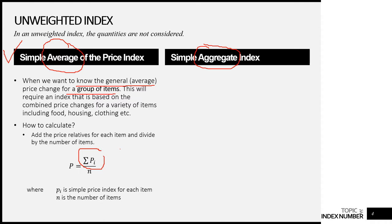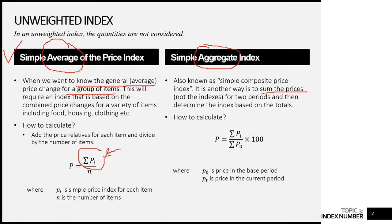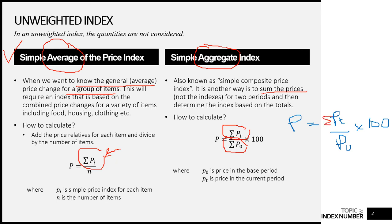Alternatively, instead of adding price indexes, we can add prices directly — which is the second method: the simple aggregate index, also known as the simple composite price index. Here, we add all of the prices in the current period, divide by all of the prices in the base period, and multiply by 100. This is essentially the simple price index formula extended to a group: the sum of current prices over the sum of base prices times 100.